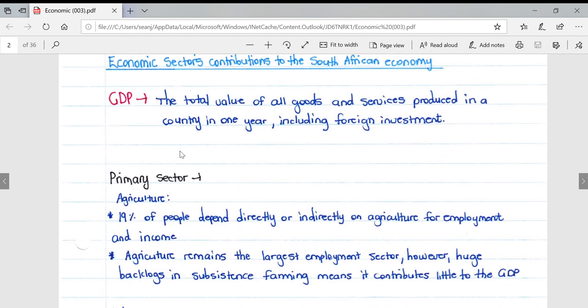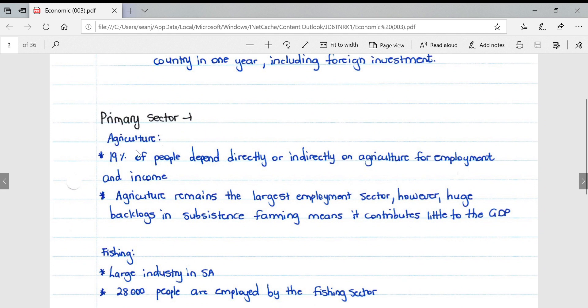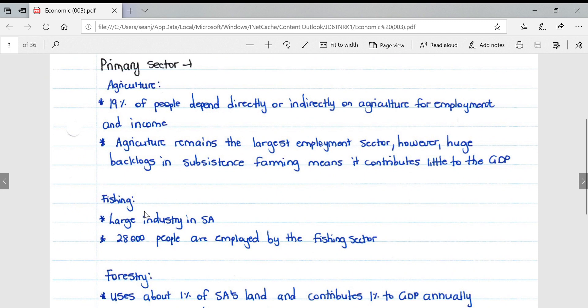For the primary sector's contribution to South Africa's economy, 19% of South Africa's population depends directly or indirectly on agriculture for employment and income. Agriculture remains the largest employment sector, however huge backlogs in subsistence farming means it contributes little to the GDP.